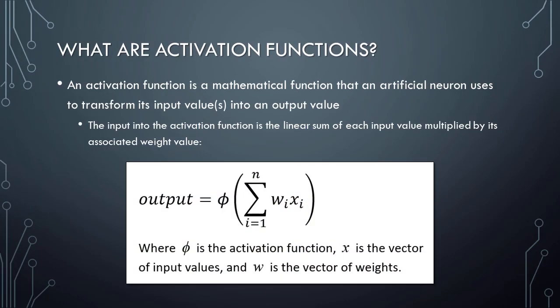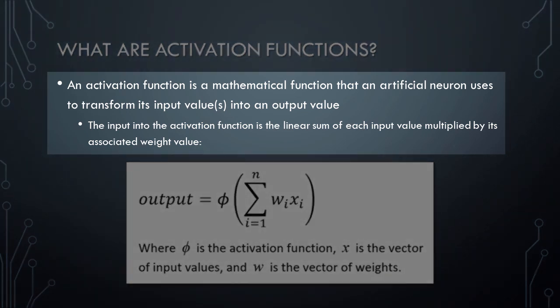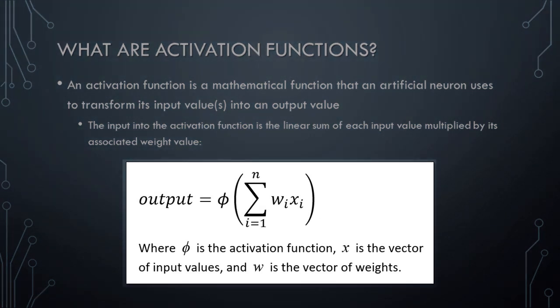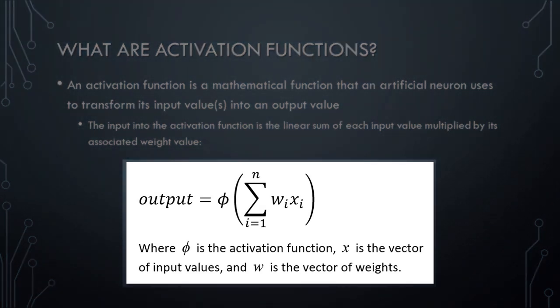Next, let's learn about activation functions. An activation function is simply a mathematical function that an artificial neuron uses in order to transform its weighted input values into an output value. As shown in this equation, the activation function takes just one input value, which is calculated as the linear sum of each input value multiplied by that input value's associated weight. We just need to multiply each input value by its associated weight and then add all of the results together to get the single value that will be passed into the artificial neuron's activation function.